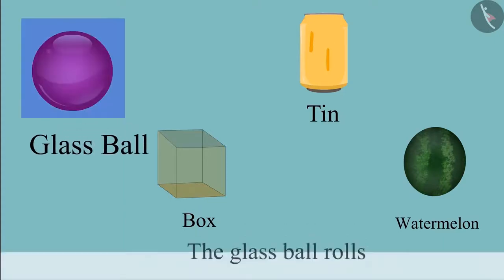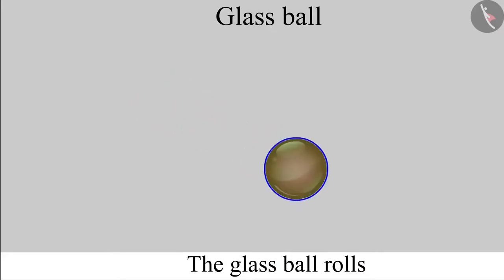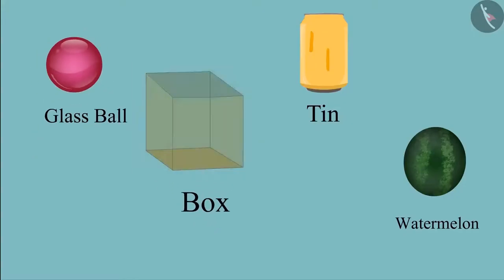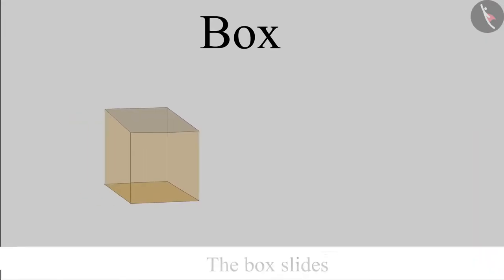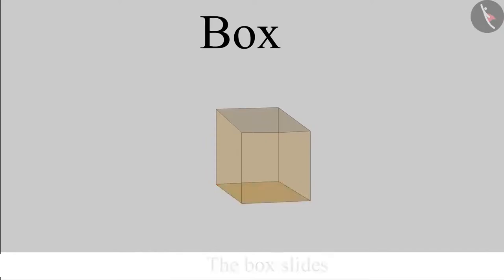This is a glass ball. It can only roll because its surface is round. This is a box. It can only slide because none of its surface is round.